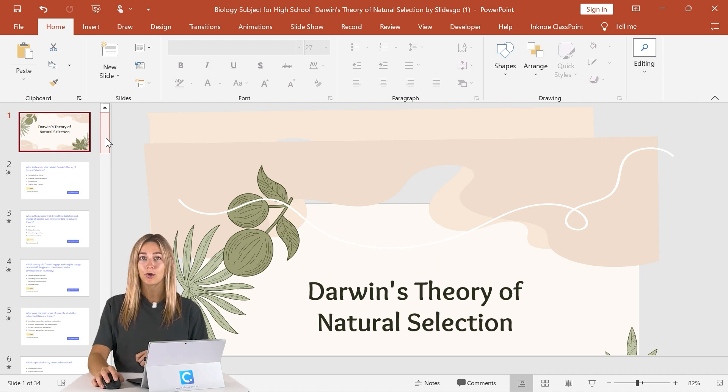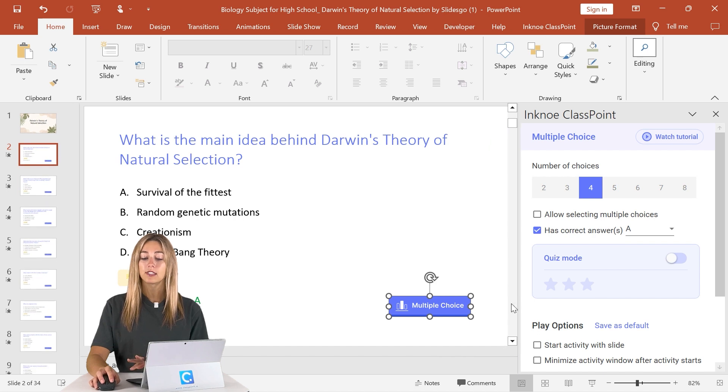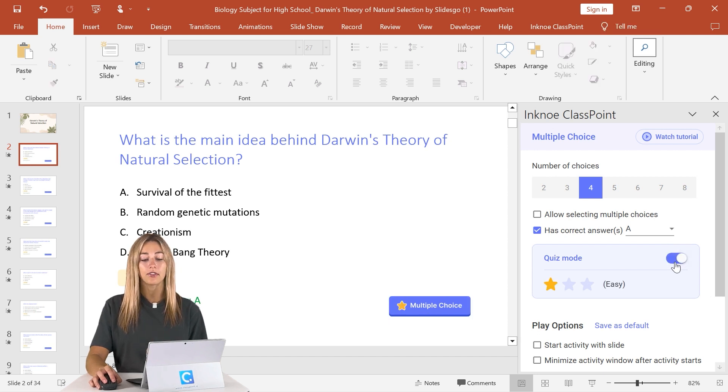Next up to set up this competition is clicking on our multiple choice button here. You'll see the ClassPoint side panel opens up with the number of choices and the correct answer already filled in for you, which is so nice. To make it that competition and auto award stars, we're going to click on quiz mode here. Then you can set the level of difficulty based on your question. This also corresponds to the number of stars that your audience will receive if they answer the question correctly.